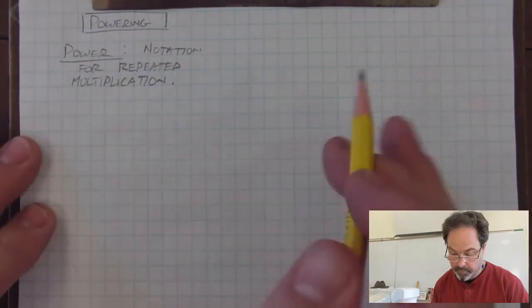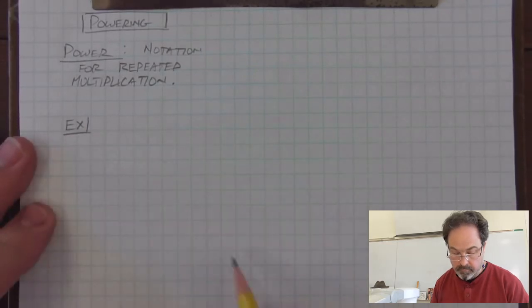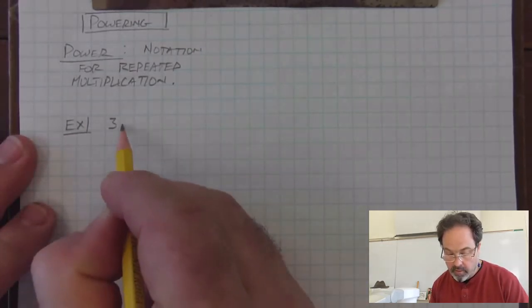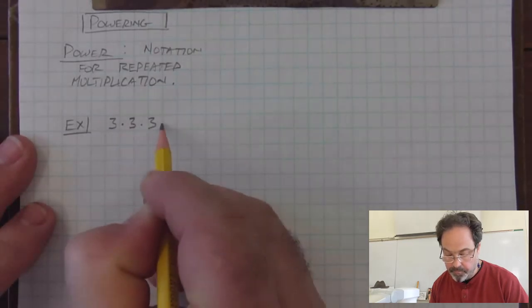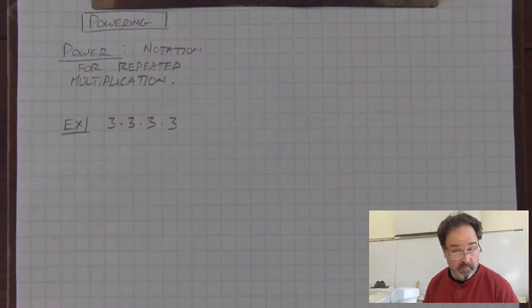For example, we can have repeated multiplication, such as 3 times 3 times 3 times 3. We're repeatedly multiplying 3 by itself four times.